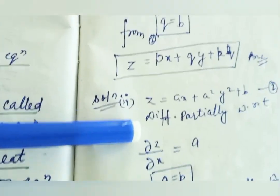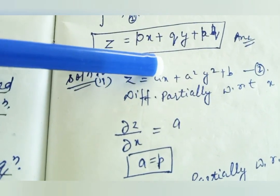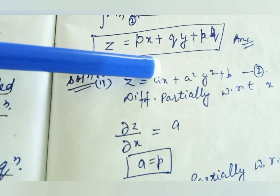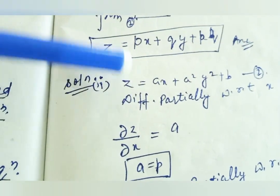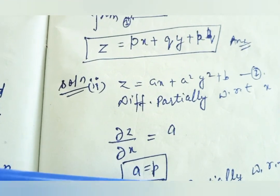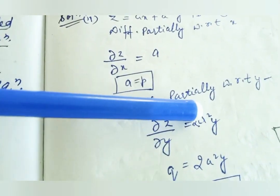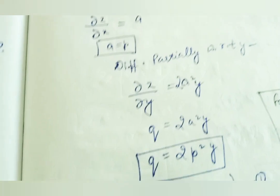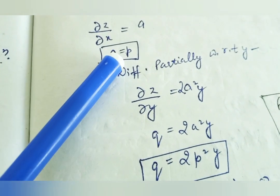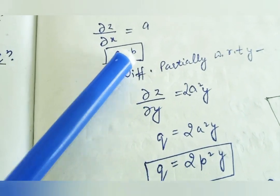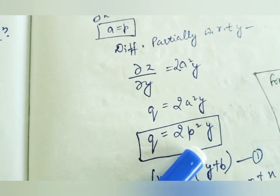After that, the second solution will be given. A is written, B is written. Taking the partial derivative with respect to X gives A. Taking the derivative with respect to Y gives Q. We get 2A squared, then A is given here. P is substituted here, and A is derived — giving the partial differential equation.